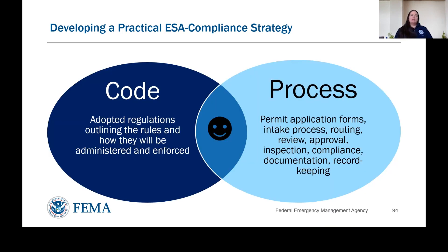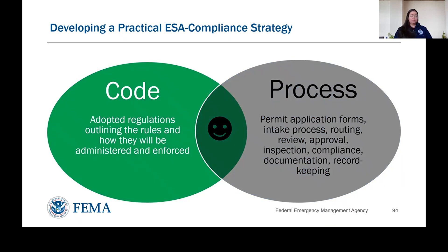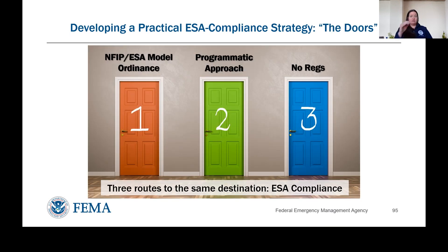When we think about local planning and floodplain management, it really has two parts. The obvious part is code — the adopted regulations that outline the rules and how they will be administered and enforced, what's in your municipal code. Just as important is process: how do these regulations and code translate into daily real-world actions? That includes permit application forms, intake process, routing of applications, review, approval, inspection of development, enforcement, compliance documentation, and record keeping. If you've only adopted the words but haven't developed a process to put that into action, you're missing a massive part of how this operates.